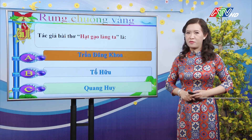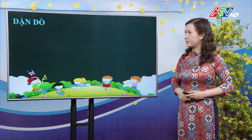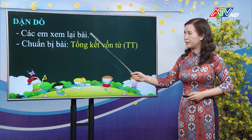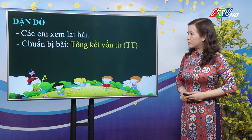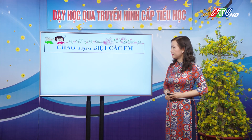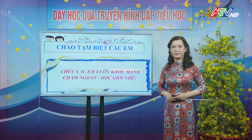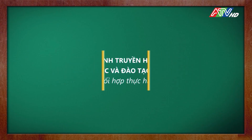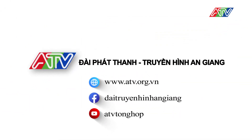Qua trò chơi rung chuông vàng, cô gửi lời khen đến các bạn đã chọn được đáp án đúng. Sau tiết học này, các con hãy xem lại bài từ tuần 1 đến tuần 15 ở các phân môn tập đọc, chính tả, luyện từ và câu và tập làm văn. Các con chuẩn bị bài sau là tổng kết vốn từ tiếp theo. Tiết học của chúng ta đã hết rồi, cô chào tạm biệt các con, chúc các con luôn khỏe mạnh và chăm ngoan học giỏi. Cảm ơn các bạn đã theo dõi.